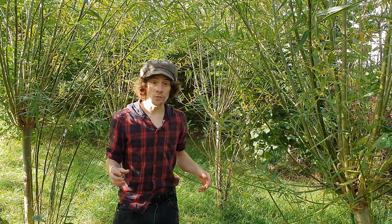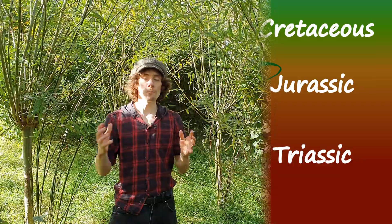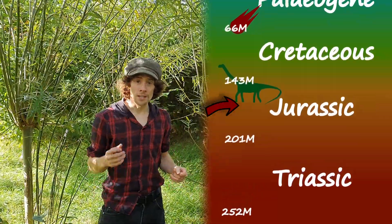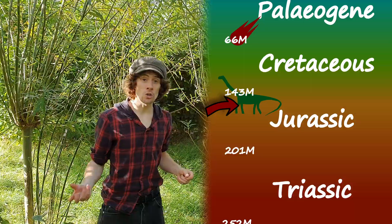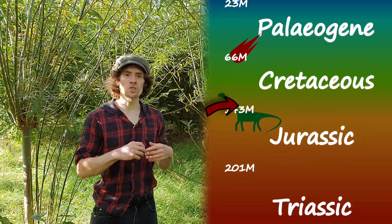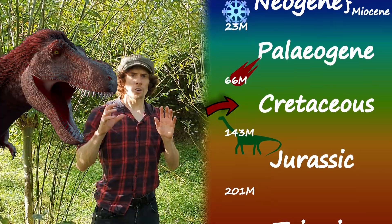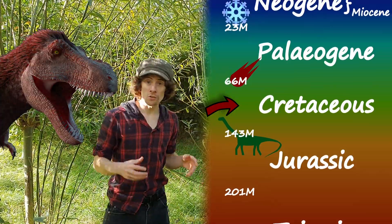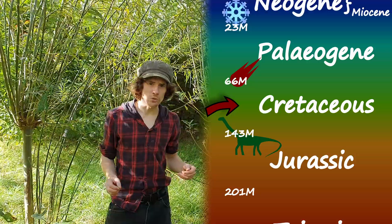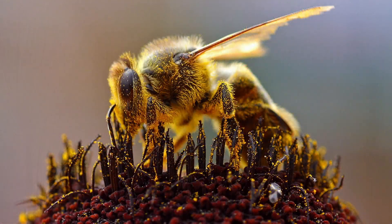Grass fossil records first appear from the Cretaceous period, 100 million years ago, when the global climate was hot and damp. This was after the dinosaur Diplodocus roamed the earth, and around the same time as the Tyrannosaurus rex evolved. But it wasn't common. Grass fossil records from the time are really rare and are mainly in the form of microfossils, smaller than the human eye can see, such as pollen.